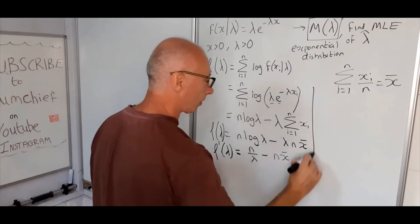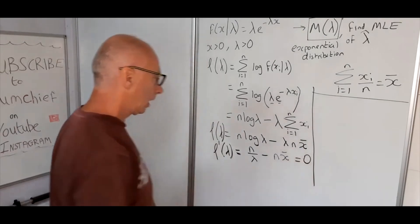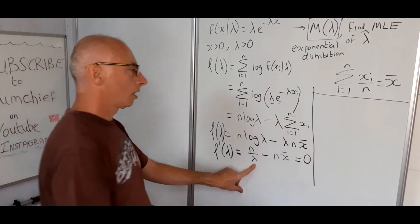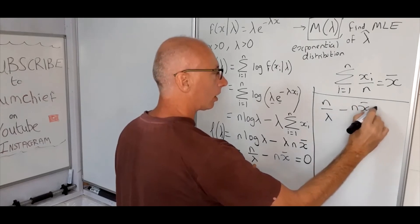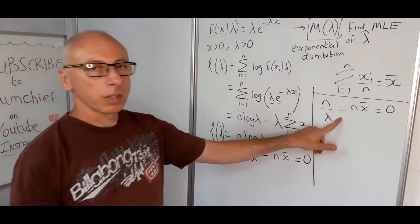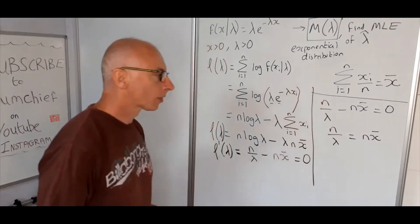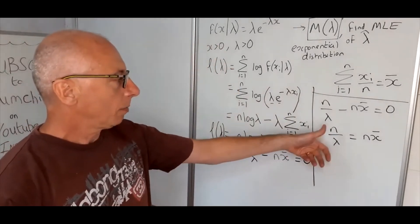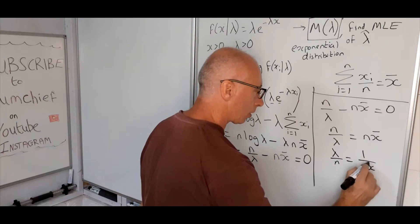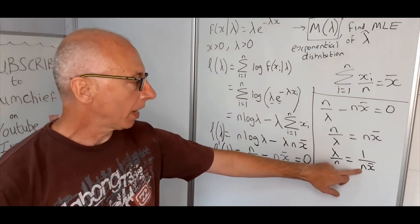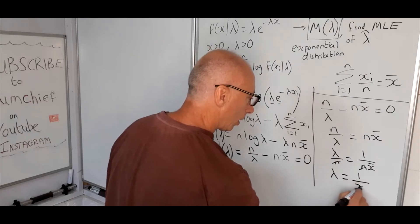We're well on the way to finding the MLE. We set the first derivative to zero: n / lambda - n * x̄ = 0, which gives n / lambda = n * x̄. Rearranging, we get lambda = 1 / x̄.